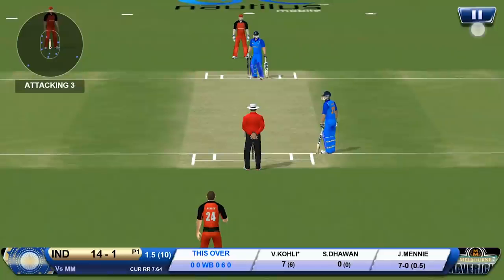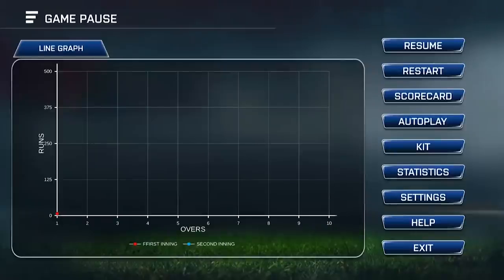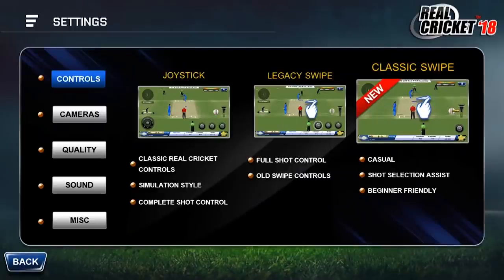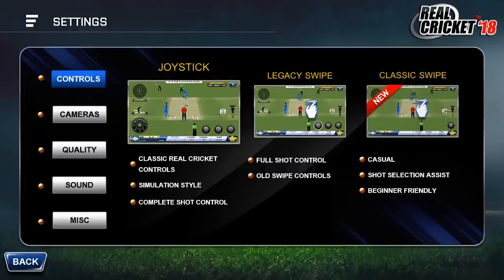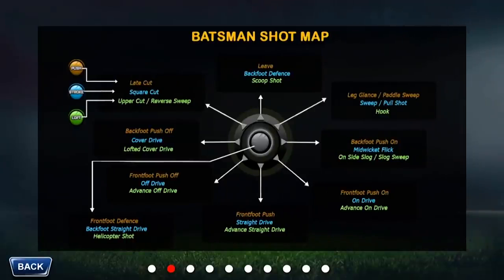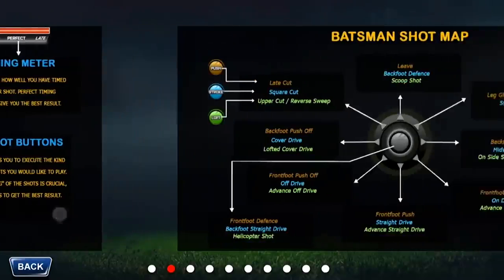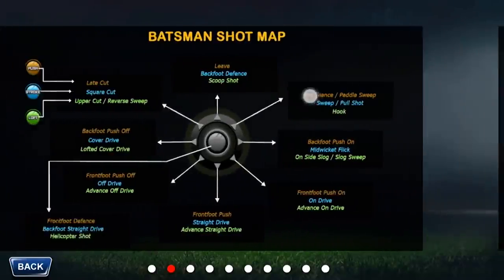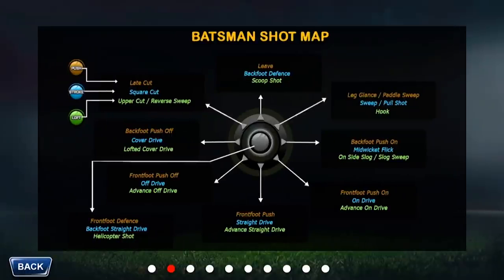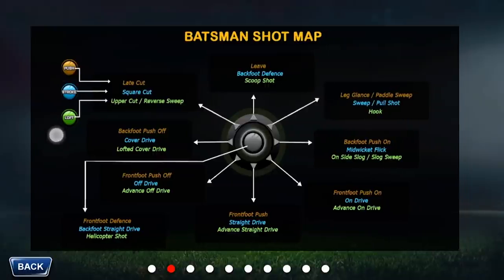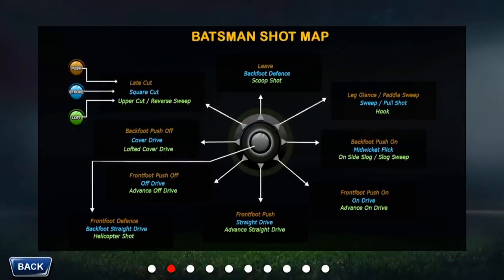Now I'll show you how to play with joystick controls. To begin, go to the pause menu, then settings, controls, and select joystick. I'll also take you through the shot map for the joystick controls. If you go to the help section, here is the shot map — we have three buttons along with all the shots mapped in various directions. Let's go back to the match and I'll show you how to play with this control.